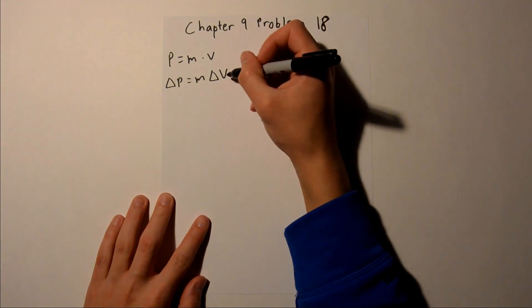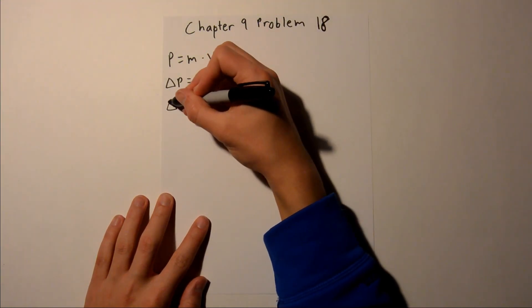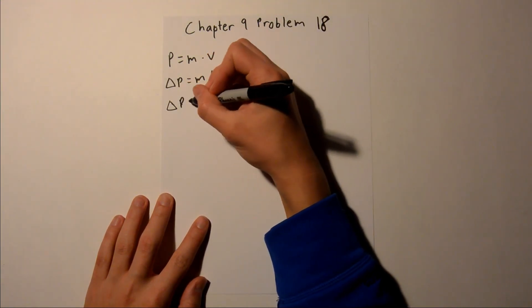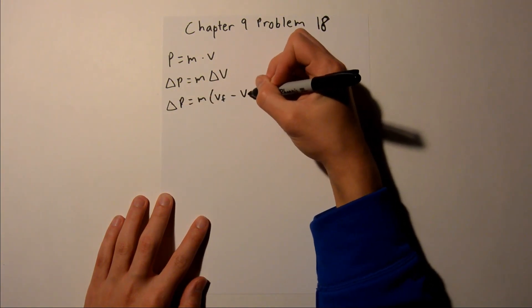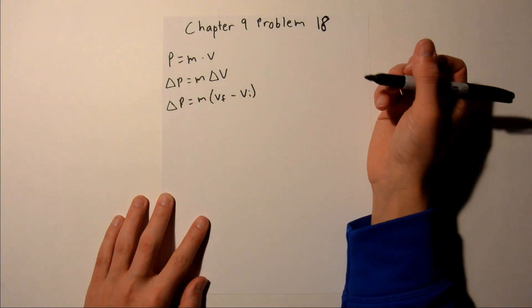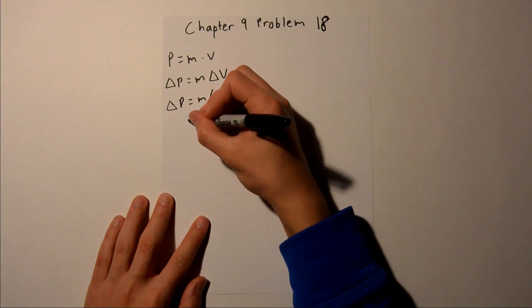And we can expand the delta v, so we can make it the change in momentum is equal to m times velocity final minus velocity initial. And we are given all those values.